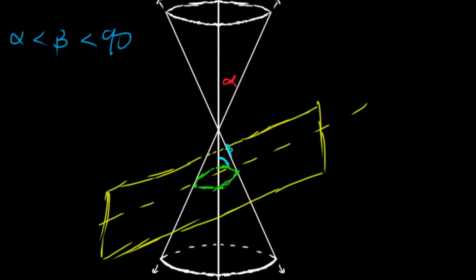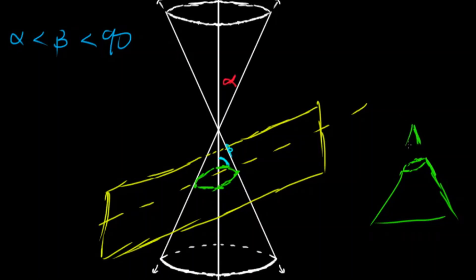We are getting an ellipse here. What this looks like is a cone cut at that angle — it's a stretched-out circle, almost like an oval, but it has special properties so we're not going to call it an oval. This is our ellipse.